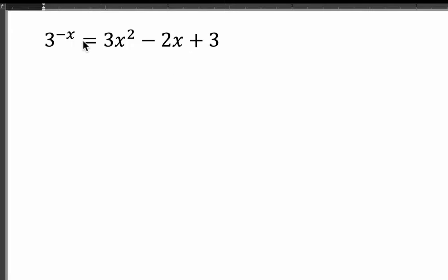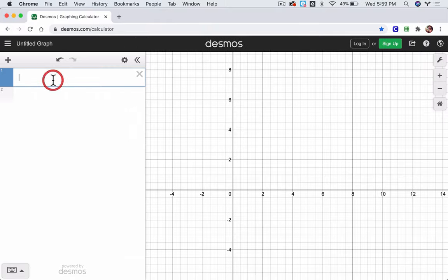So we have 3 to the negative x, okay? Go to Desmos, 3 to the negative x. I'm going to set that as my first function, equal to y.